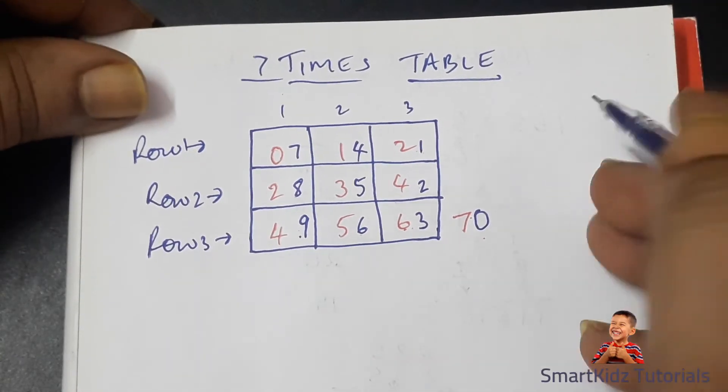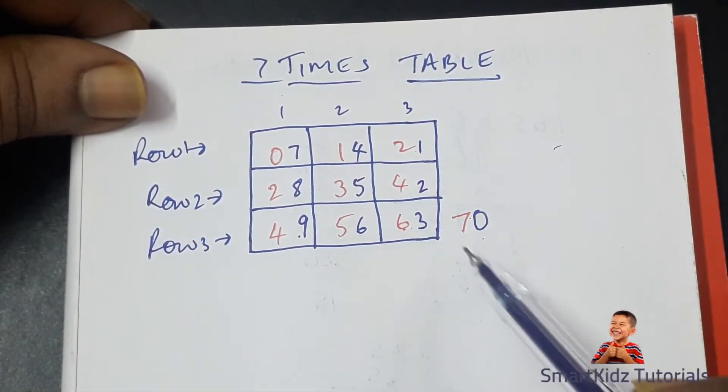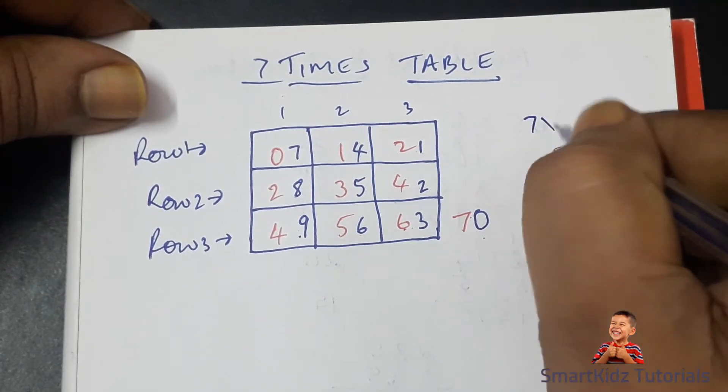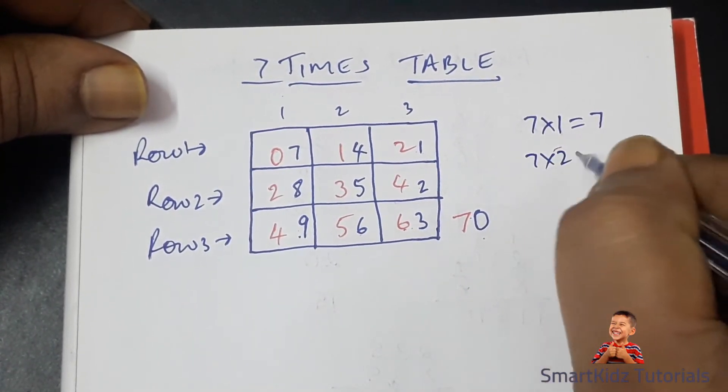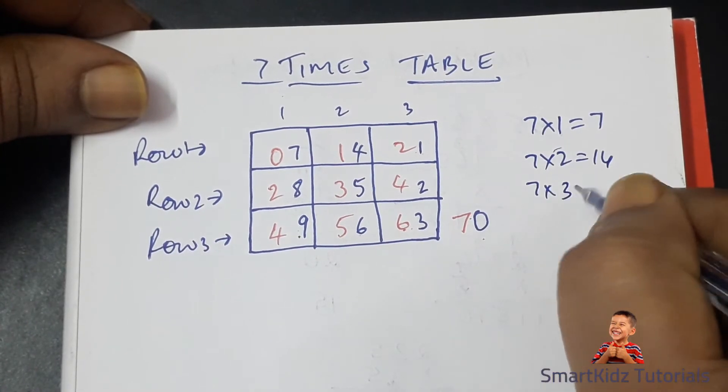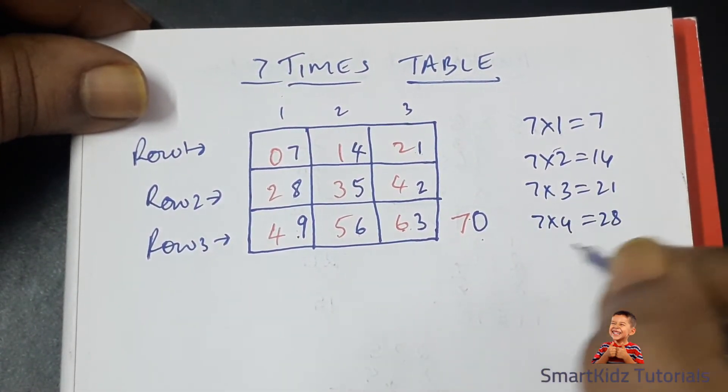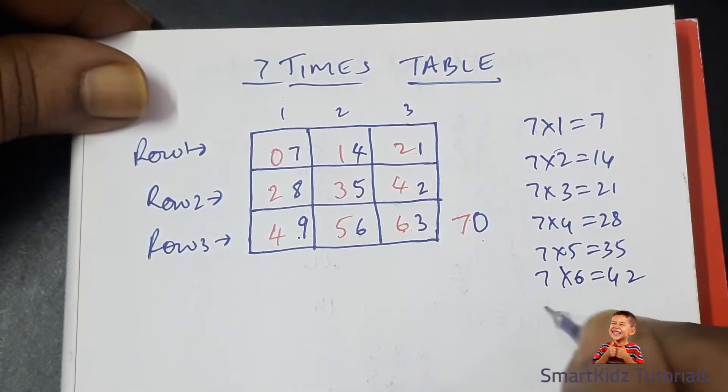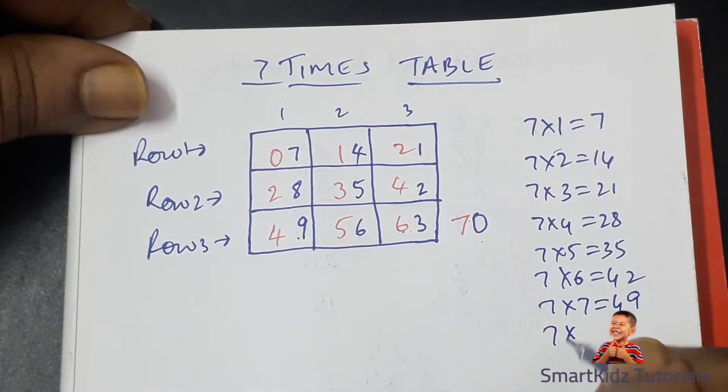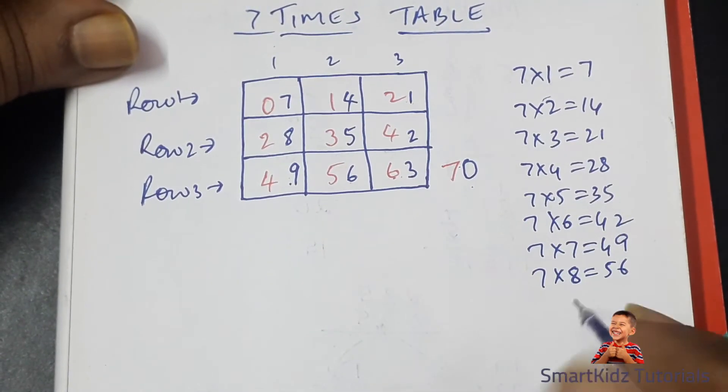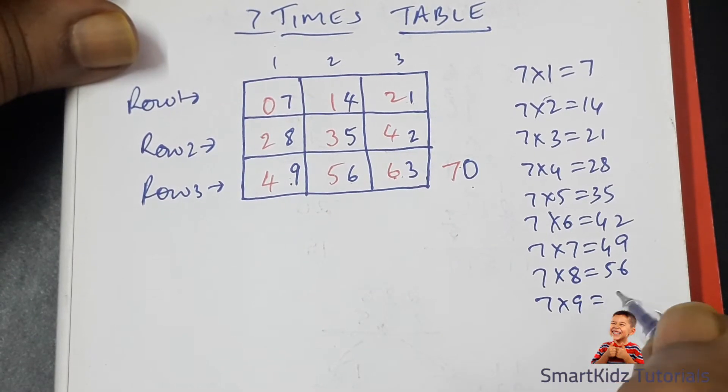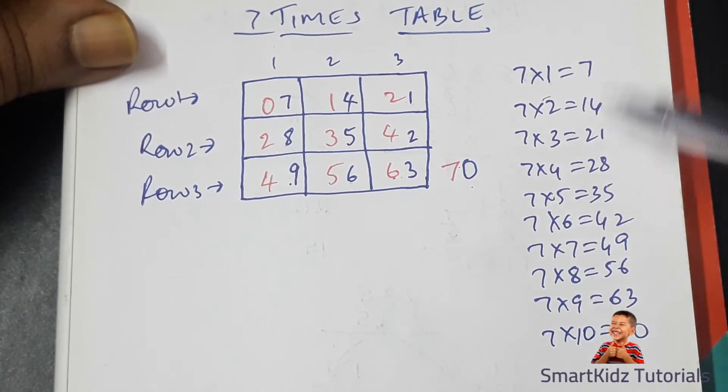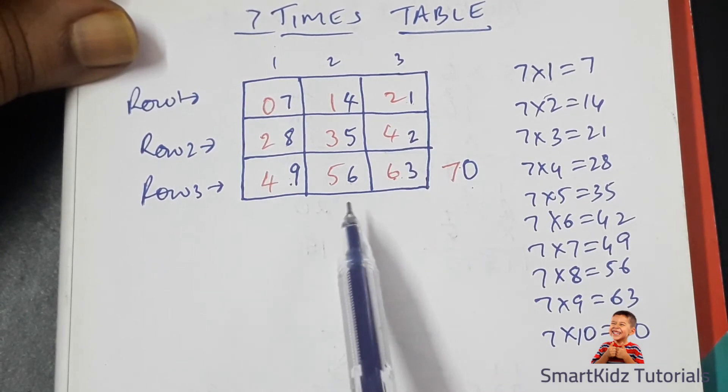Now we'll check what the seven times table actually looks like and compare it with our table to see if we have all the values correct. Seven ones are 7, seven twos are 14, seven threes are 21, seven fours are 28, seven fives are 35, seven sixes are 42, seven sevens are 49, seven eights are 56, seven nines are 63, and seven tens are 70. Comparing this with our table, we'll find that this trick is correct and accurate.